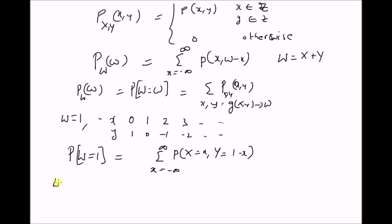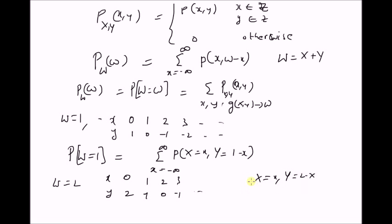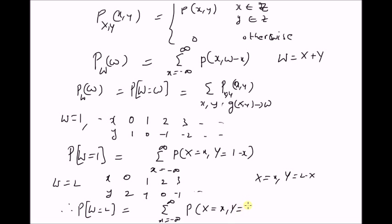Similarly, for W equal to 2, we can see that for x equal to 0, y equal to 2; x equal to 1, y equal to 1; x equal to 2, y equal to 0; x equal to 3, y equal to minus 1, and so on. That is, for x equal to x and y equal to 2 minus x, we satisfy the mapping from (x, y) to W equal to 2. Therefore, the probability of W equal to 2 should be equal to the summation from x equals minus infinity to plus infinity of p(x, 2 minus x).